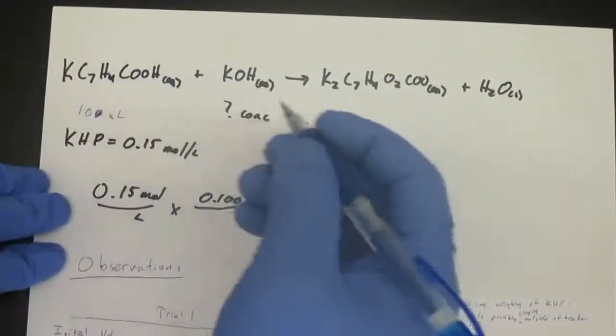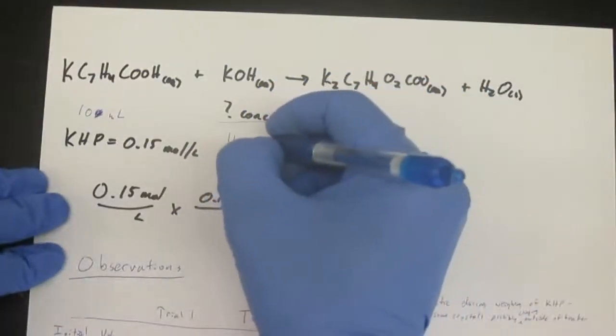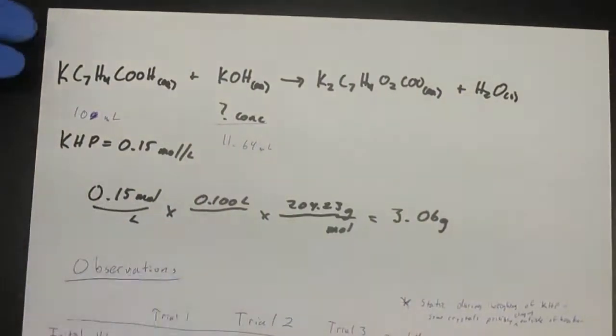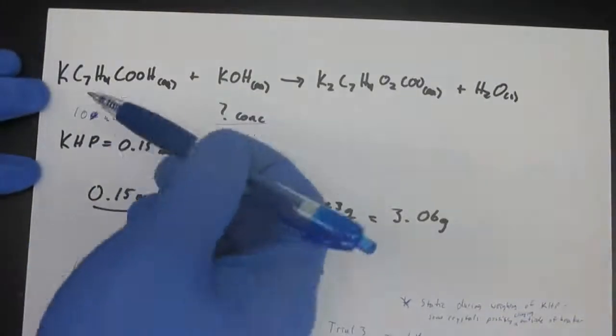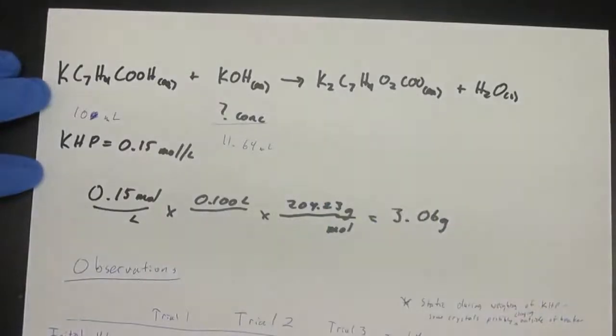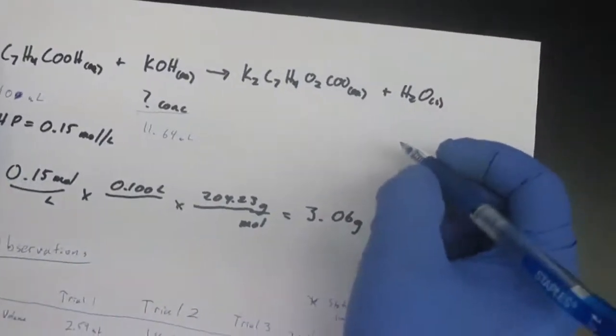Now you see here a classic stoichiometry problem, right? We have a volume and a concentration; we have a volume and an unknown concentration. So let's go ahead and do the calculation.